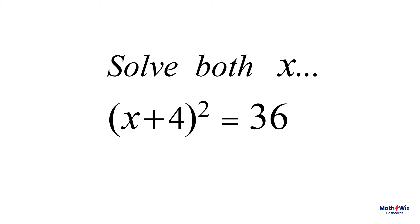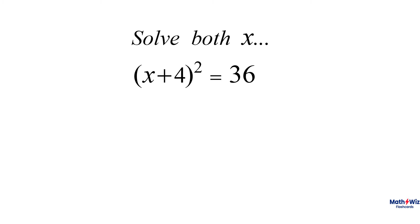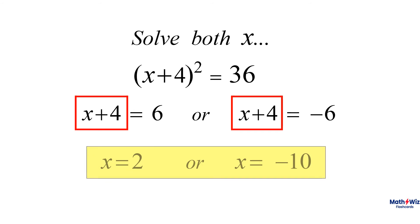In our first example, quantity squared equals 36. Therefore, quantity x plus 4 equals 6, or negative 6. So x equals 2, or negative 10.